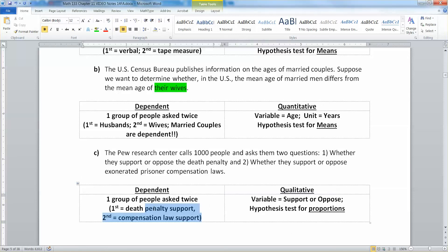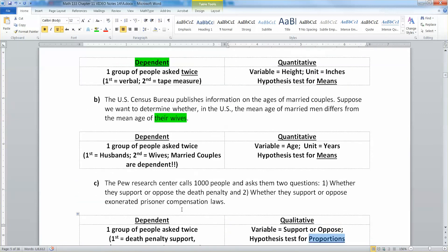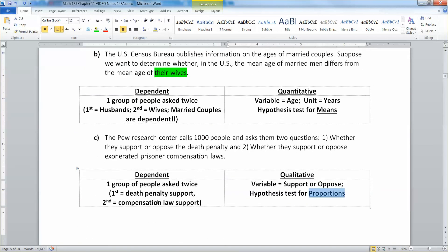There we go. So first one, first question is death penalty support. Second question is compensation law support. But it's, do you support or oppose? That makes it qualitative. And that means you're doing a hypothesis test for proportions. Once this data is qualitative like this, it's proportions that the test you're doing. And of course, we're going to run into tests of both means and proportions in this chapter.